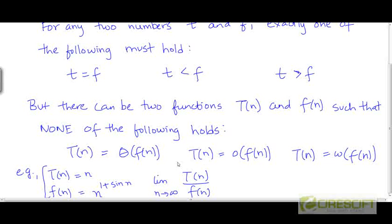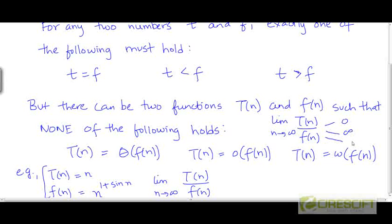Before we look at this example, this may appear strange at first sight, because saying that none of these three holds is equivalent to claiming that if we take the limit as n tends to infinity of t divided by f, the value of this limit is neither 0, nor infinity, nor some positive constant c greater than 0. How is that possible?